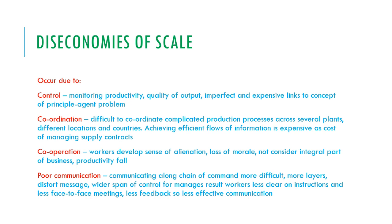Diseconomies of scale include problems with control — monitoring productivity and the quality of output becomes imperfect and expensive, which links to the principal-agent problem. There is also the issue of coordination — it's difficult to coordinate complicated production processes across several plants in different locations and countries, and achieving efficient flows of information is expensive alongside the cost of managing supply contracts. There's also cooperation — workers can develop a sense of alienation and a loss of morale and will not feel considered as an integral part of the business, meaning their productivity will fall. Finally, there is poor communication — communicating along a chain of command becomes more difficult as there are more layers, which can distort the message. The wider span of control from managers results in workers being less clear on their instructions, with less face-to-face contact and less feedback, so communication is less effective.